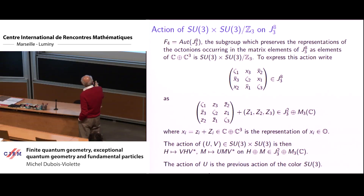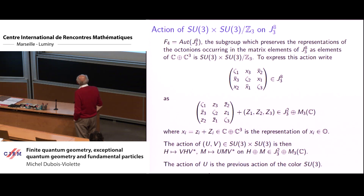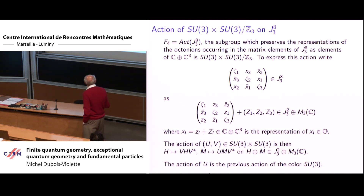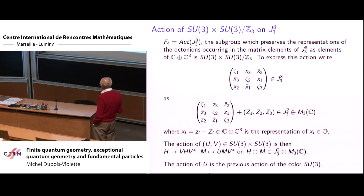Writing the matrix and separating the C component — the leptonic component — from the C³ quark component: the leptonic part gives a Hermitian 3×3 complex matrix, and the quark part gives a full (not necessarily Hermitian) 3×3 complex matrix. The action of (u,v) ∈ SU(3) × SU(3) is: adjoint action of v on the Hermitian part, and u · M · v* on the full complex matrix part. If you multiply both u and v by an element of ℤ₃ it disappears, which is why it is SU(3) × SU(3) / ℤ₃.